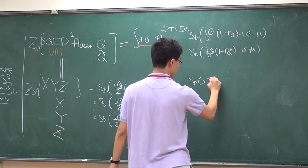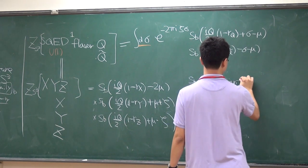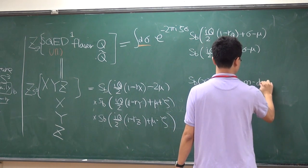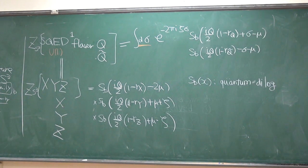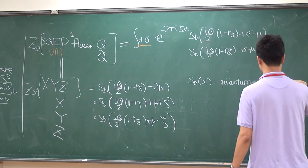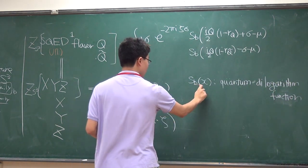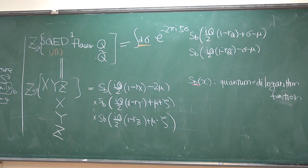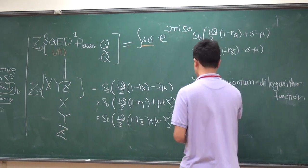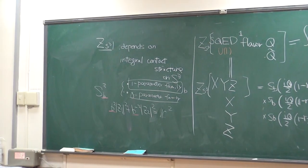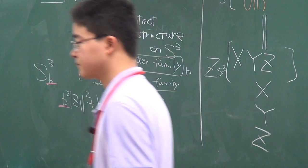This special function S_b unfortunately has many, many different names — the double sine, quantum dilogarithm, et cetera. But I call it the quantum dilogarithm, or sometimes people call it the non-compact quantum dilogarithm. This will be a rather important function in the remaining 30 minutes. This parameter b is the same as the deformation parameter. And I also use the notation that Q is equal to b plus b⁻¹.